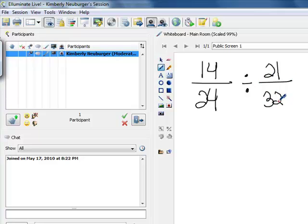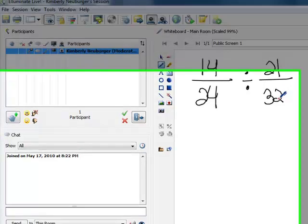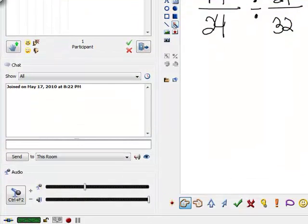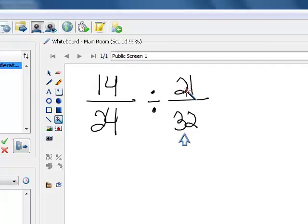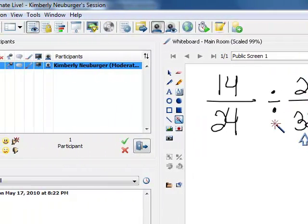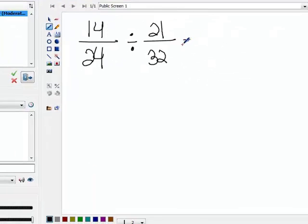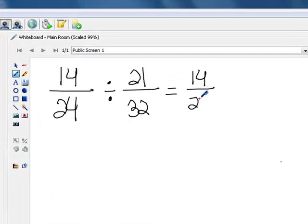If you remember back to when you divided these regular fractions, the rule was that you took the reciprocal of what you were dividing by, which in this case is 21 over 32. Taking the reciprocal means you flip it over, and then you switch this division symbol into multiplication. So that turns this problem into 14 over 24 times 32 over 21.